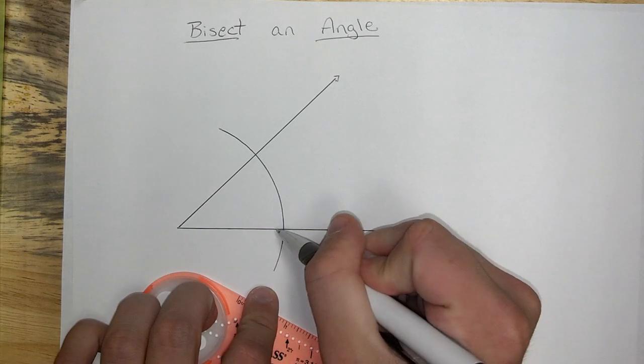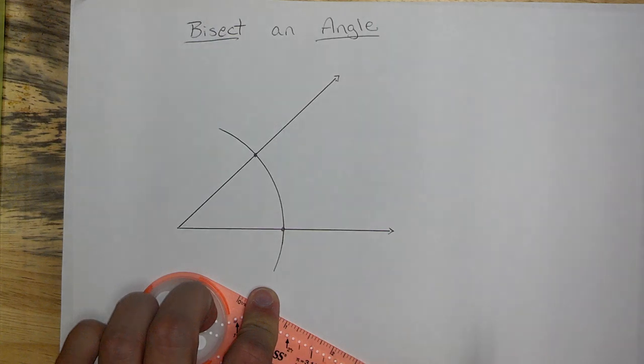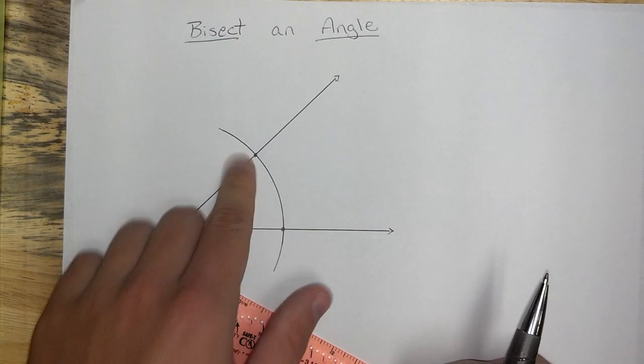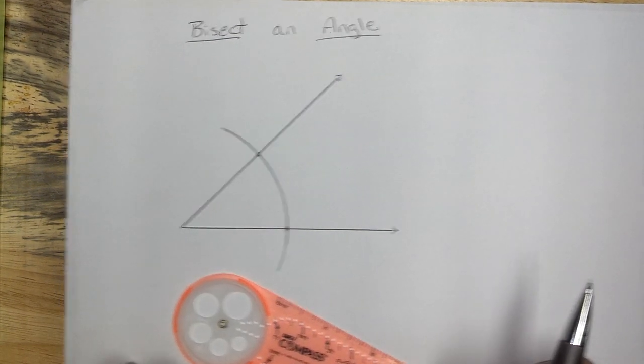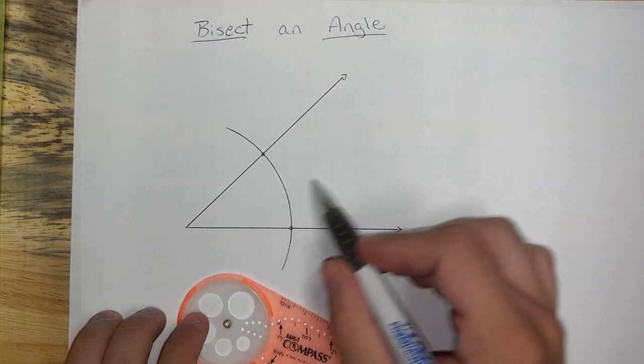Because now, the two points that we're concerned about is where that arc hits my angle. Those two points are super important. Those are going to be the two points that we use to find a bisector that's going to chop right through the middle here.